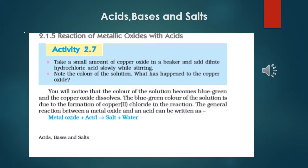Now let's look at the reaction between metallic oxide and acid. Take a small amount of copper oxide — copper oxide is a metallic oxide because copper is a metal — in a beaker, and then add dilute hydrochloric acid slowly and stir. Note the color of the solution and what happened to the copper oxide.